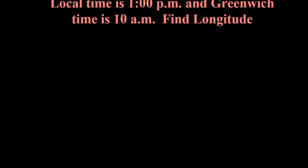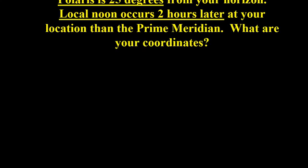Here's a problem for you to try. If you need to pause and go back to the previous problem to follow the steps, you may do so. Here is the next problem: Polaris is 25 degrees from your horizon, and local noon occurs two hours later at your location than at the prime meridian. What are your coordinates? We're going to do this one together because the given information is a little different from the previous problem.